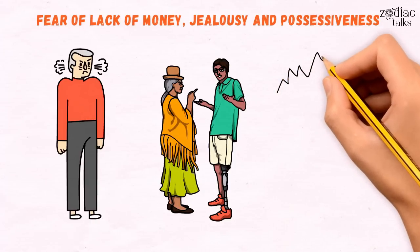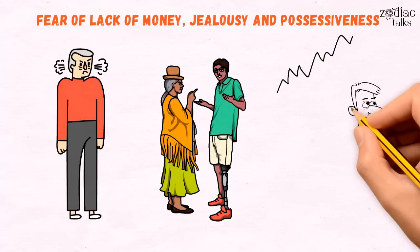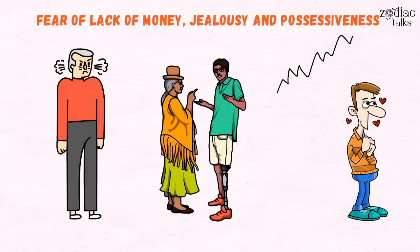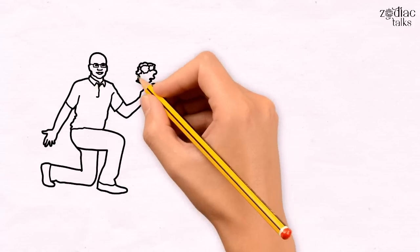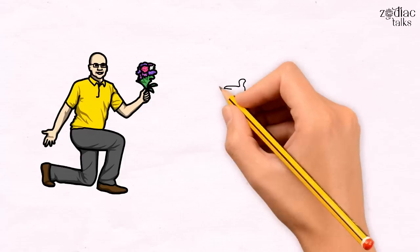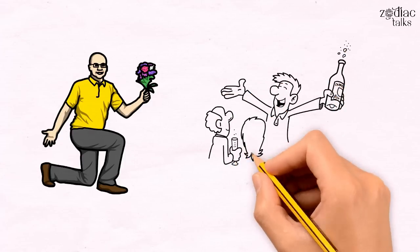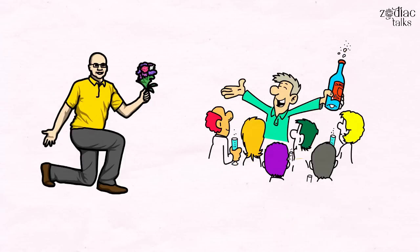When they embody the form of a higher vibrational self, Taurians are very generous with gifts and their attention. They can give with both hands and expect nothing in return, as well as cook delicious food and share it with all who come to their quite luxurious abode.